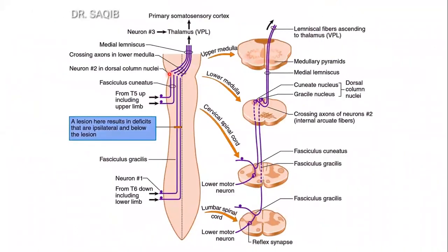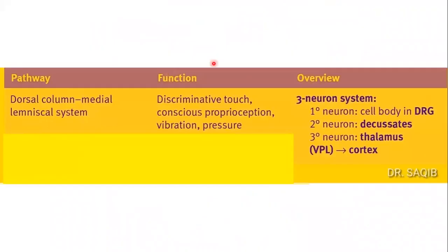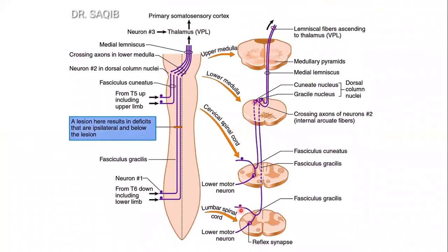To recap the three orders of neurons: the first-order neuron cell body is in the dorsal root ganglion; the second-order neuron decussates; and the third-order neurons are lying in the thalamus.